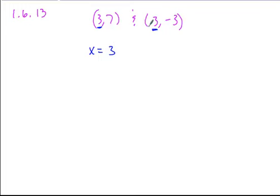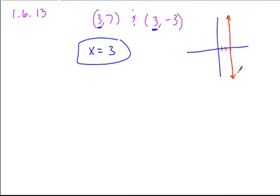x is equal to 3 in both of those. This is my equation. Thinking of the graph for this, the graph is a vertical line where x is always going to be 3.